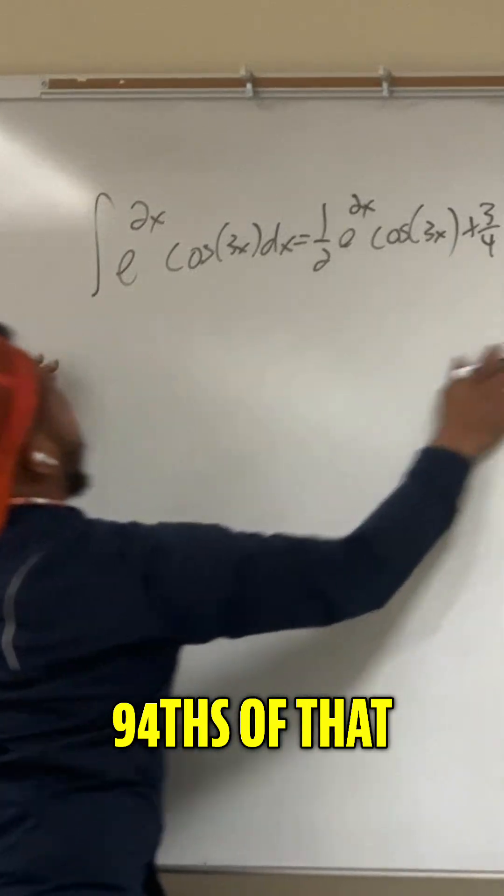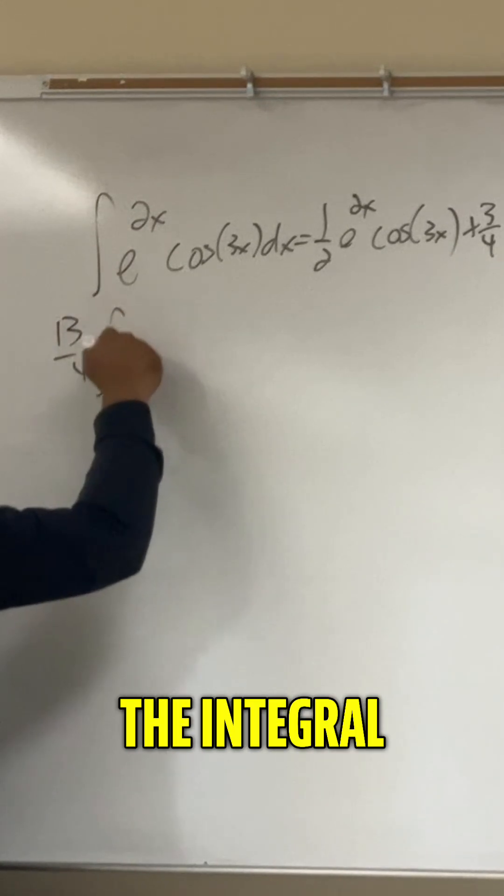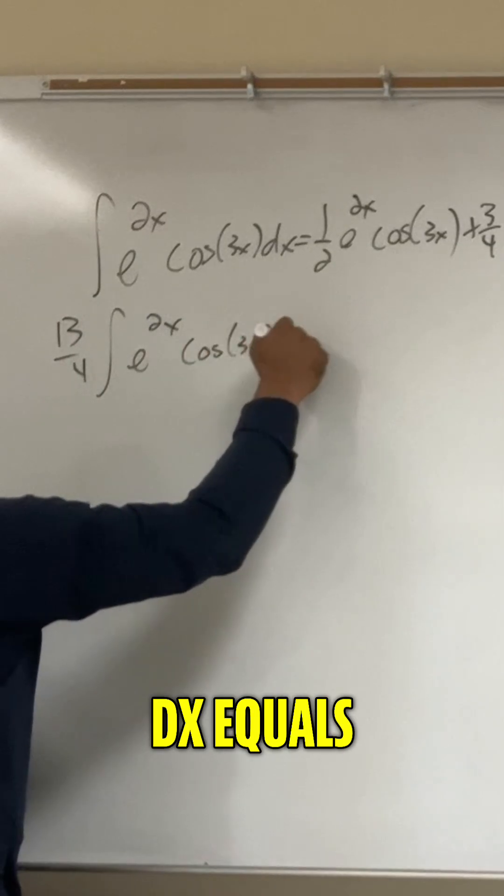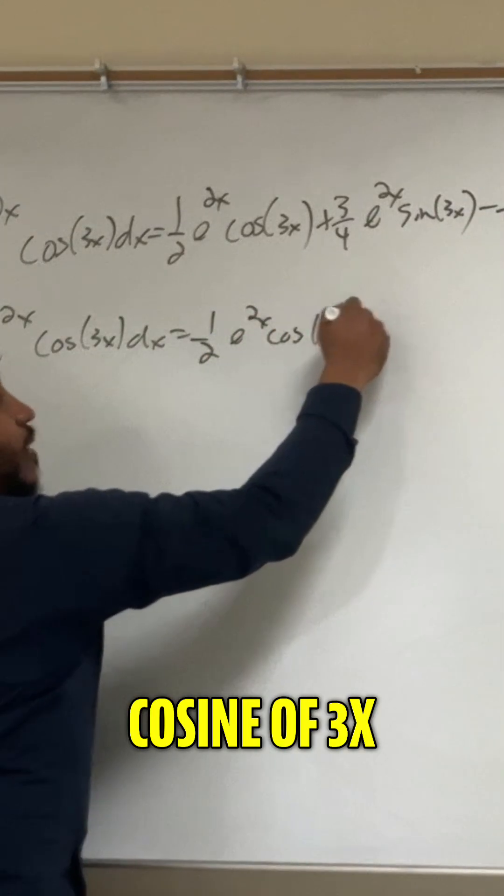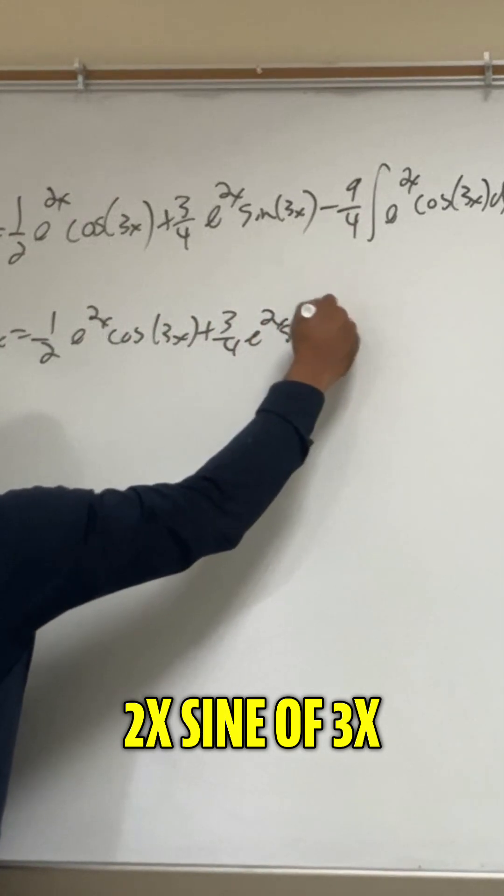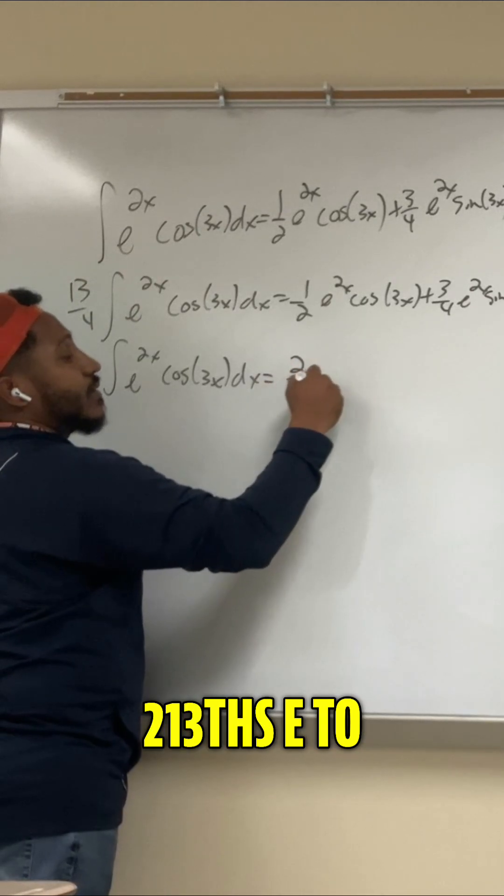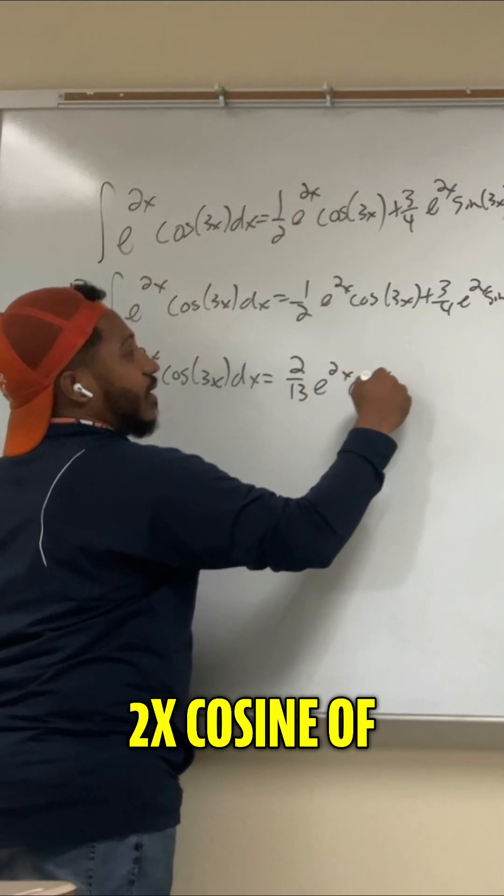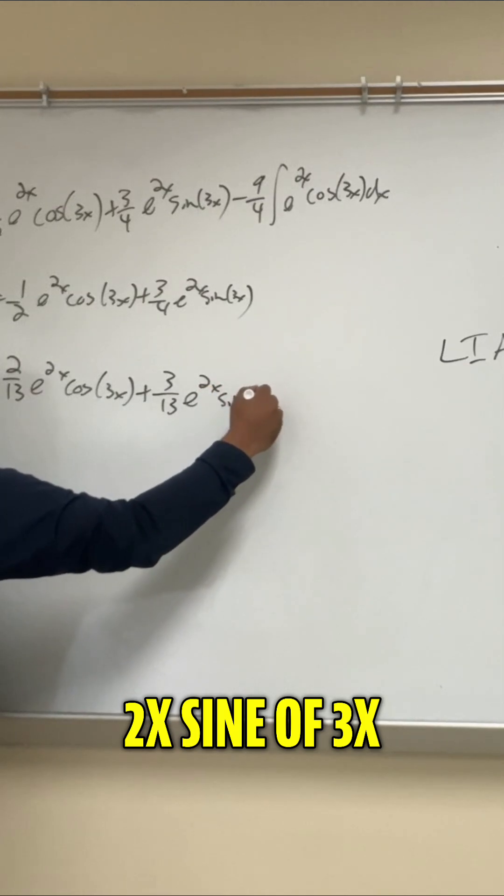If I add 9 fourths of that same integral, that gives me 13 fourths times the integral of e to the 2x cosine of 3x dx equals half e to the 2x cosine of 3x plus 3 fourths e to the 2x sine of 3x. And now dividing by that 13 fourths, 2 thirteenths e to the 2x cosine of 3x plus 3 over 13 e to the 2x sine of 3x.